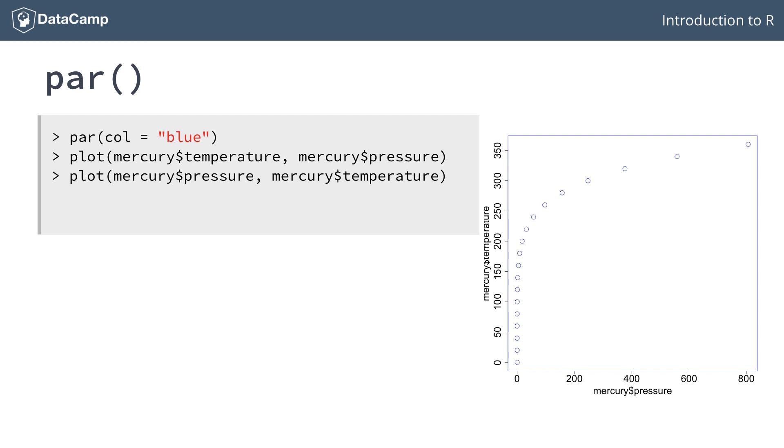If you list all graphical parameters again, and select the col element, you'll see that indeed, it's still set to blue.